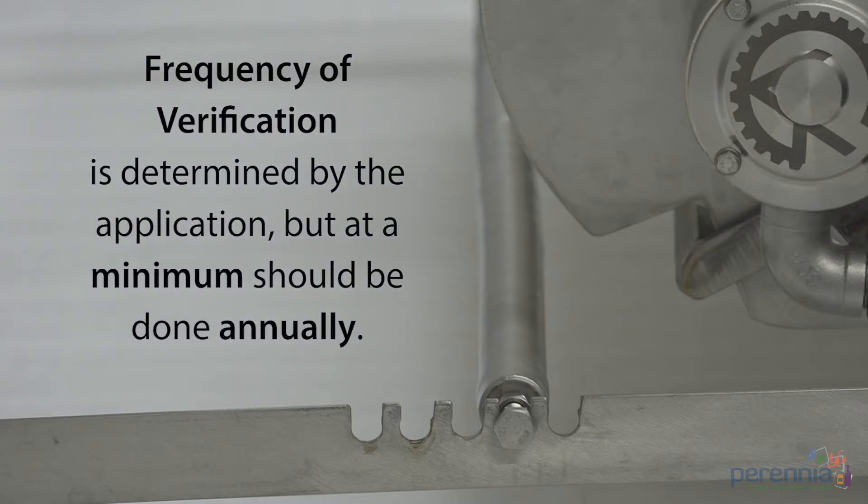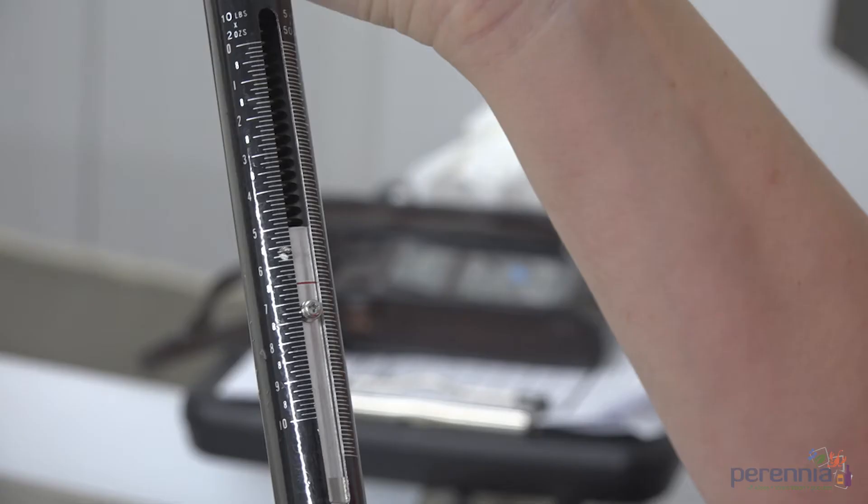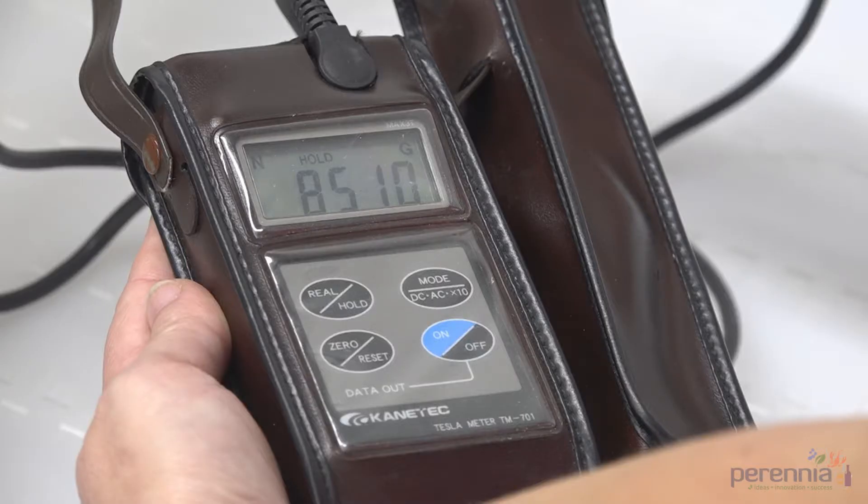The frequency of verification will depend on individual applications, but generally, at a minimum, annually. There are different types of test kits, such as mechanical scale, spring scale, or digital, which is the Gauss or Tesla meter.